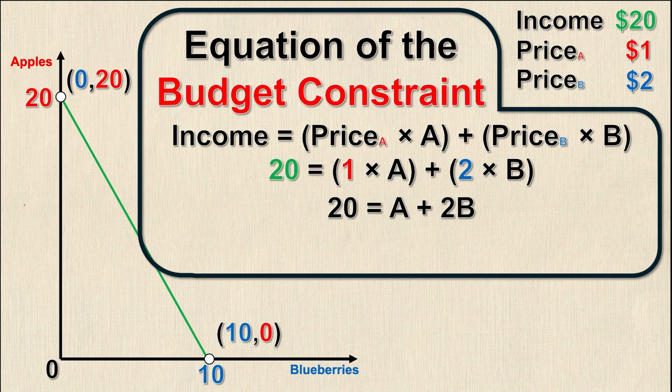This is the equation of the budget constraint for this exact problem. You'll notice it's linear and the two variables are apples and blueberries. You could have them as good X and good Y, it doesn't matter. However, I could rearrange this to isolate for A or B depending on what I'm trying to find.